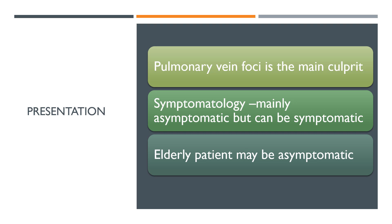Symptomatology of atrial fibrillation is mainly asymptomatic but can be symptomatic. Symptoms are mediated by loss of atrial kick and rapidity of ventricular contraction. When symptomatic, observe symptoms such as palpitation, dyspnea, chest discomfort, dizziness, presyncope, and syncope. With rapid rate, patients are typically breathless with hemodynamic instability requiring emergency referral.